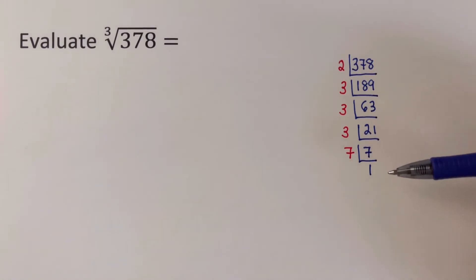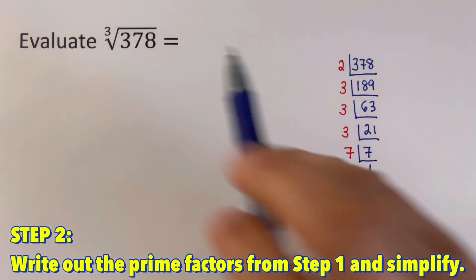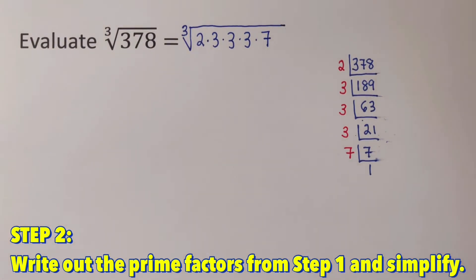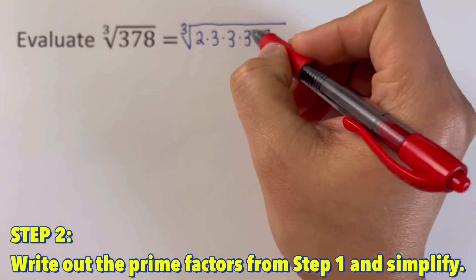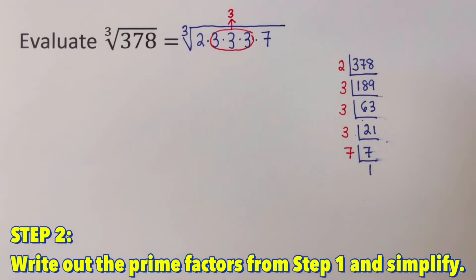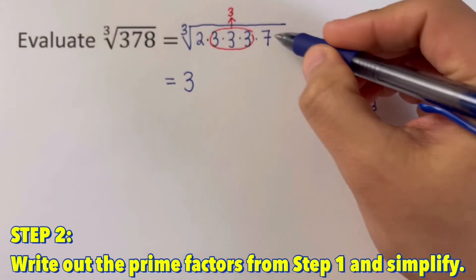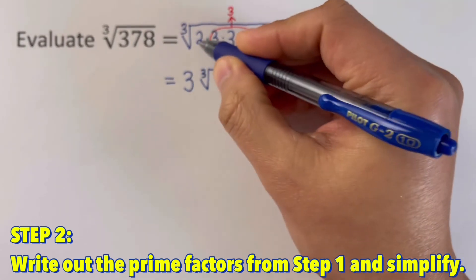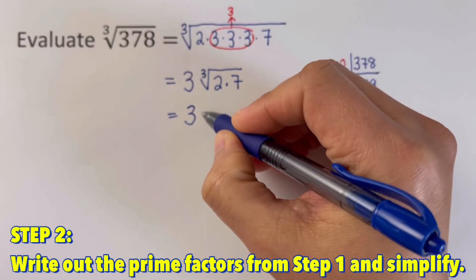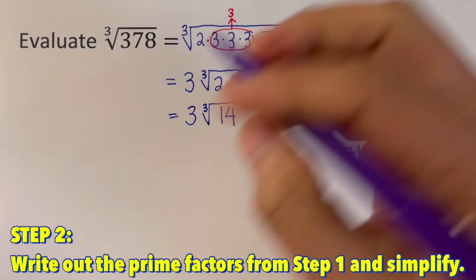We got a remainder of 1, so we can move on to the second step: write out the prime factors from step 1 and simplify. We group them into groups of 3. In this case, we have three 3s here, so these three will be grouped together and they are able to get out of the radical symbol. That gives us 3 outside. The leftover would be 2 and 7 inside the radical sign. So that's 3 times the cube root of 2 times 7, which is 3 times the cube root of 14. This is the simplified version of the cube root of 378.